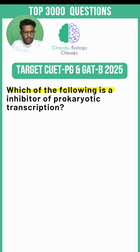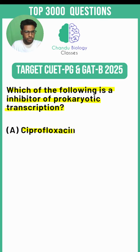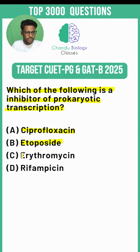Which of the following is the inhibitor of prokaryotic transcription? Option A: Ciprofloxacin. Option B: Actinomycin D. Option C: Erythromycin. Option D: Rifampicin.